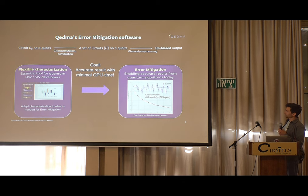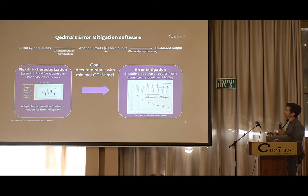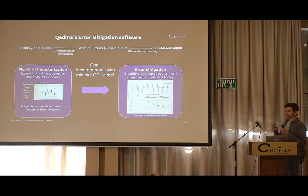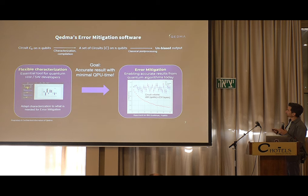Our general error mitigation scheme is as follows: you have some ideal circuit you want to run on n qubits, you characterize errors in the ingredients of this circuit, and you compile the circuit to a set of circuits on roughly the same number of qubits. Then you extract the output.